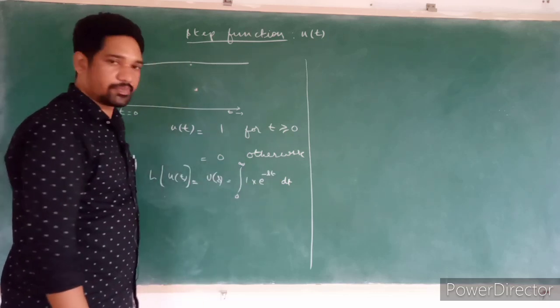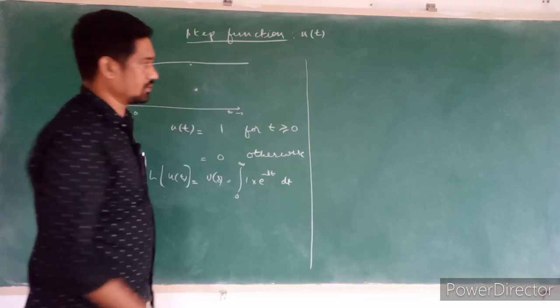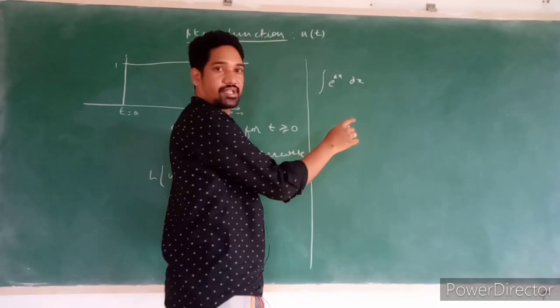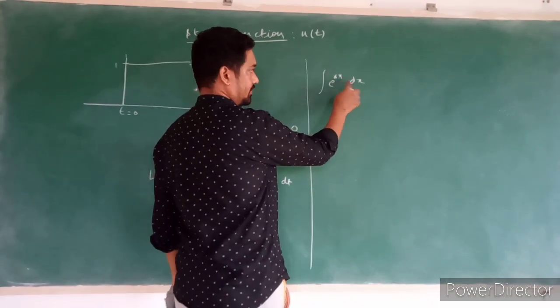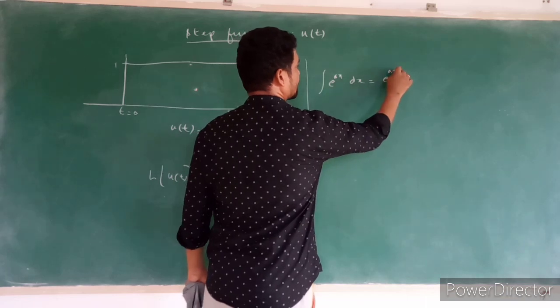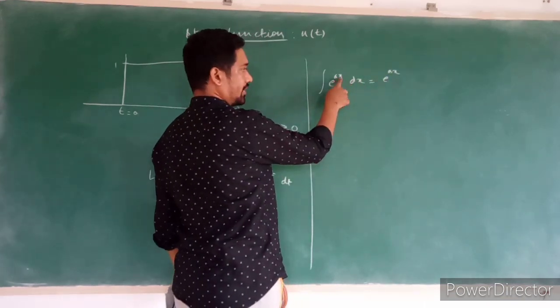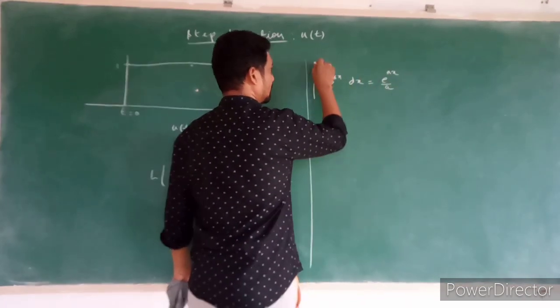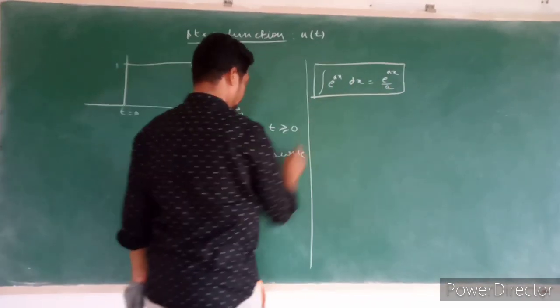And in your previous grades, you might have seen like integral e power ax dx. If the integration is with respect to x, the resultant will be e power ax and the coefficient of x will be treated as a constant. So this equation comes into picture over here.